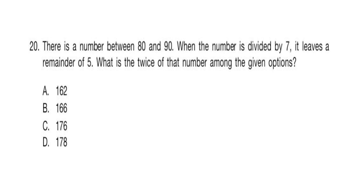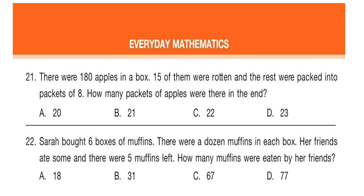Question 20: There is a number between 80 and 90. When the number is divided by 7, it leaves remainder of 5. What is the twice of that number among the given options? Question 21: There were 180 apples in a box. 15 of them were rotten and the rest were packed into packets of 8. How many packets of apples were there in the end?